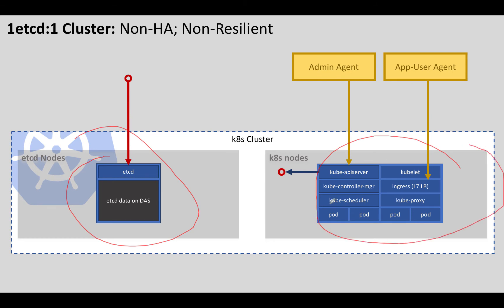If your Kubernetes node dies, you can still recover from that by firing up another Kubernetes node to replace it. But any data that your pod was using is gone, because it was saved to direct attached storage on the Kubernetes node itself, and because that node died it took the data with it. So not a very good setup, but for short-lived or throwaway clusters — like development or proof of concept clusters — this will do. But let's move on to something more production ready.